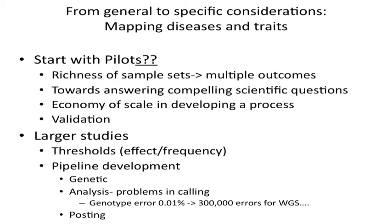So if we go from the general to the very specific considerations and thinking about mapping diseases and traits, let me throw up a first set of questions for the group to think about tonight and then tomorrow. Starting with pilot or pilots — we know that there are very rich sample sets where we have multiple outcomes, and we can certainly come up with compelling scientific questions. But the third and fourth bullets are important: the economy of scale and developing a process, and then the validation thereof, because error rate is a real issue.